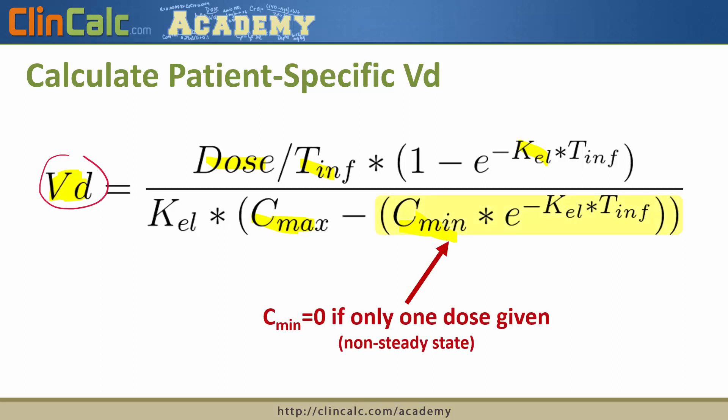Now, if a patient is not at steady state and they've only received one single dose, this whole term will actually be zero because Cmin will be zero, meaning that they didn't have a previous minimum trough concentration before dosing was initiated.